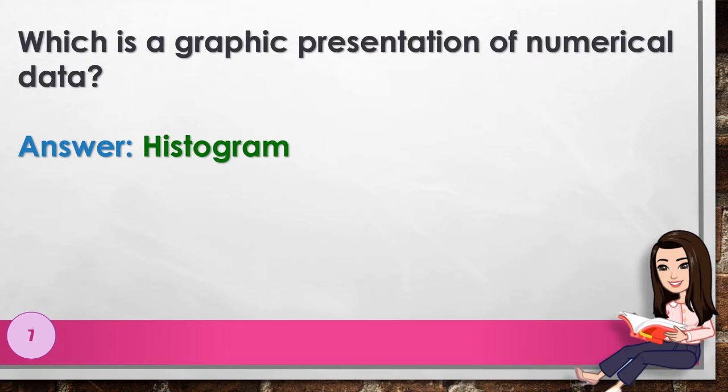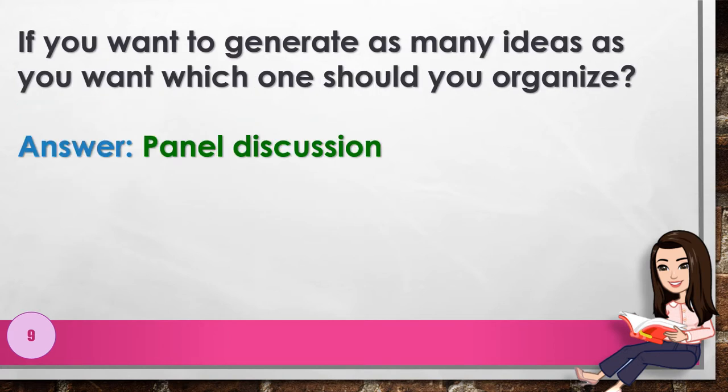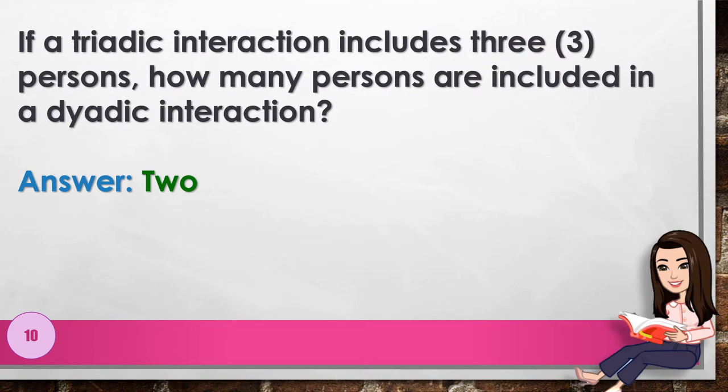Number 6: For which can the Venn diagram be used? Answer: comparison. Number 7: Which is a graphic presentation of numerical data? Answer: histogram. Number 8: You want to present the characteristic features of a constructivist approach. Which should you use? Answer: attribute wheel.